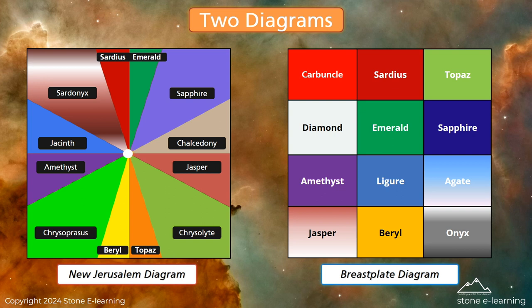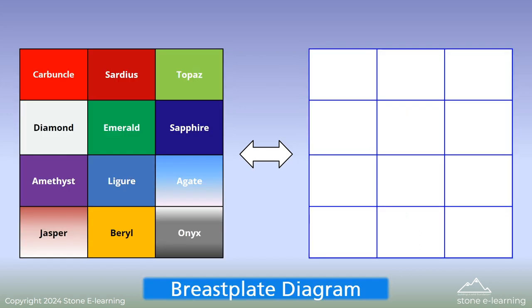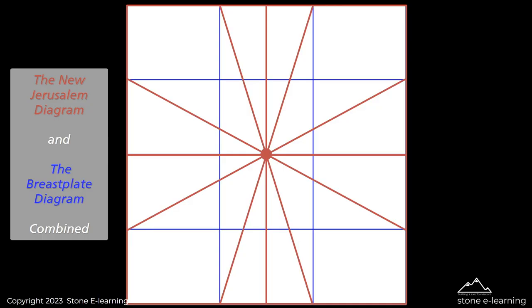Two diagrams are presented: the New Jerusalem Diagram and the Breastplate Diagram combined.